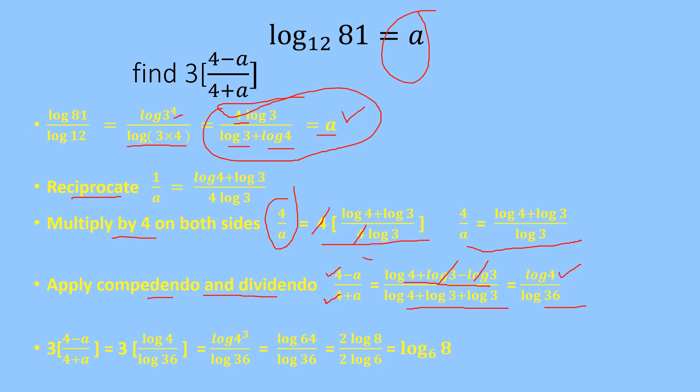In the left hand side we have 4 minus a upon 4 plus a. If you compare with the question, multiply by 3. So multiply 3 by both sides, you get 3 times 4 minus a upon 4 plus a equals 3 log of 4 upon log of 36. This 3 can be raised to the power of 4, you get log of 4 power 3 upon log of 36.